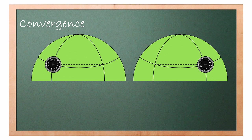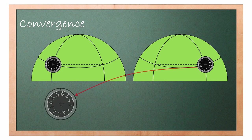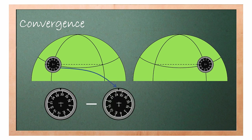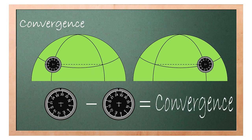Convergency can also be defined as the angular difference between the measurement of a great circle at each meridian. Look at the diagram: on the right-hand side is where the track begins and on the left-hand side is where the track ends. Looking at the compass card, both headings are different. If we take the first heading — approximately 290 — and subtract the second heading — approximately 250 — the answer will be convergency. Note: convergence and convergency are the same thing, do not get confused.